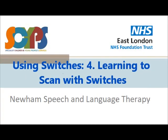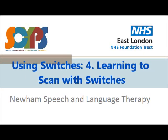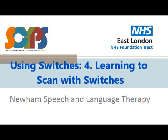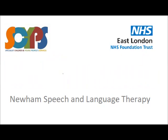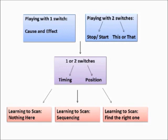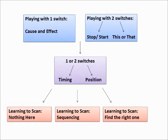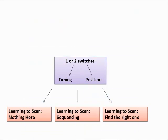In this video we're going to show you how to move forward once your child has mastered the ideas presented in our previous videos. This picture shows a basic progression of how learning cause and effect using switches can be developed into choice making by scanning through options. The two blue frames at the top show what we've covered in our previous videos. This video will focus on the middle and bottom of this progression.